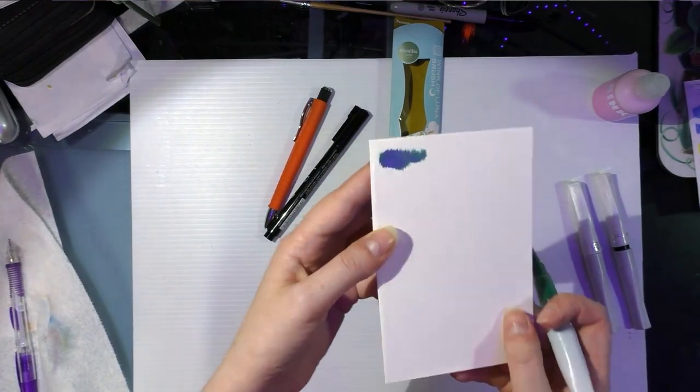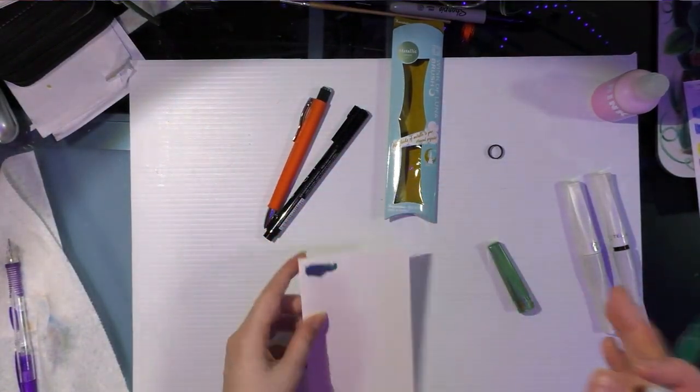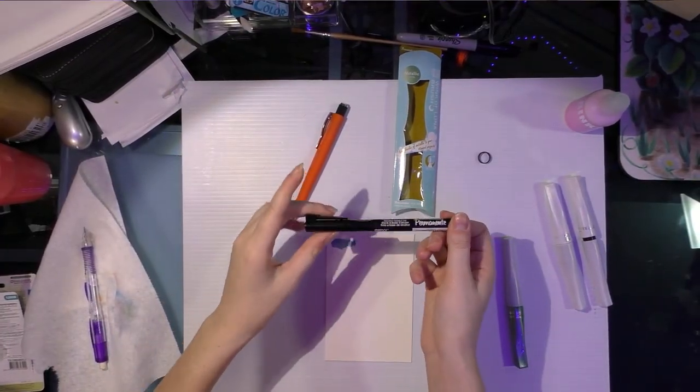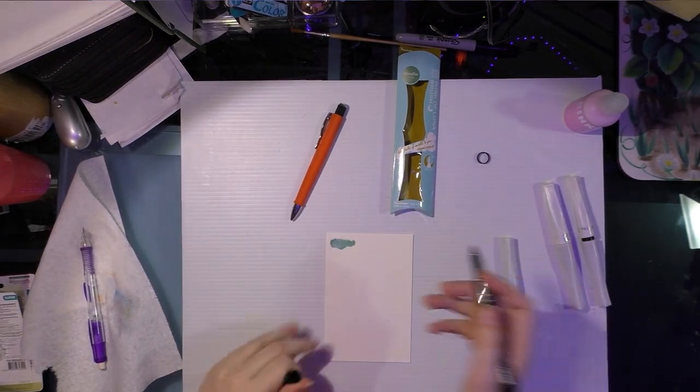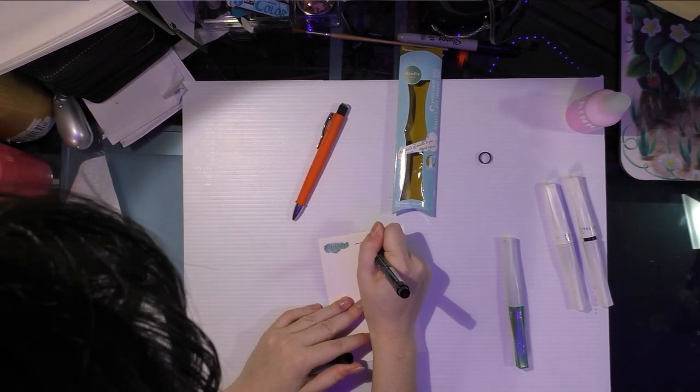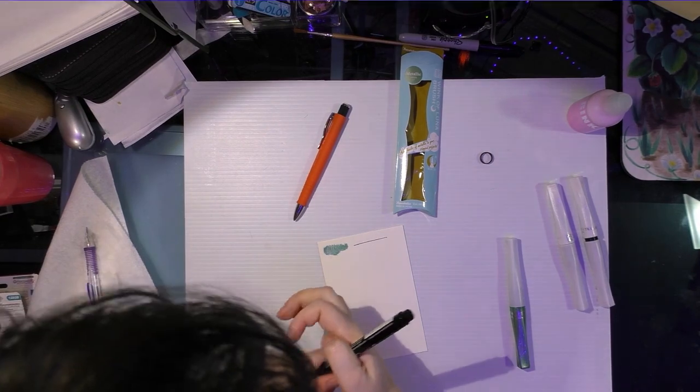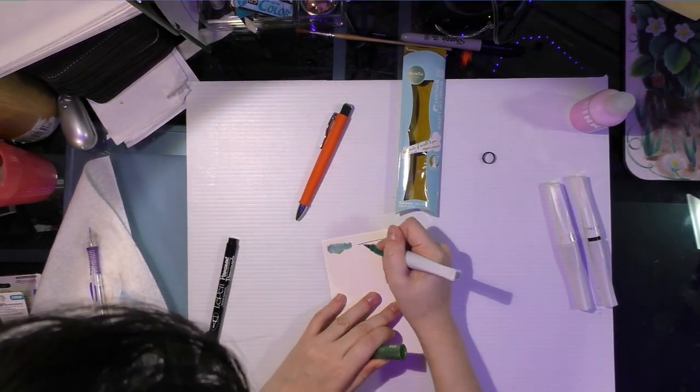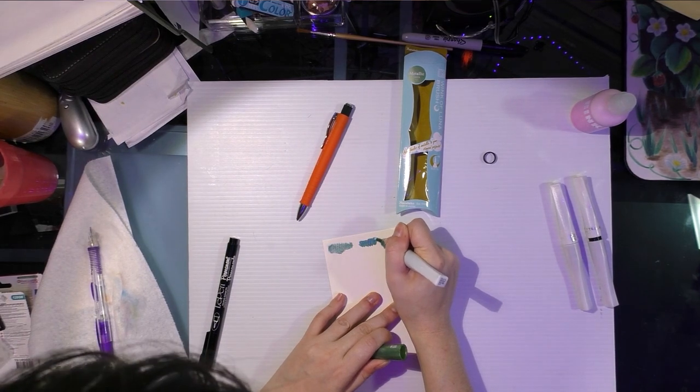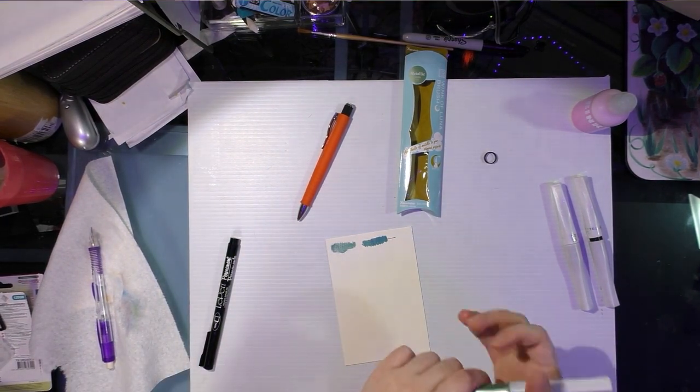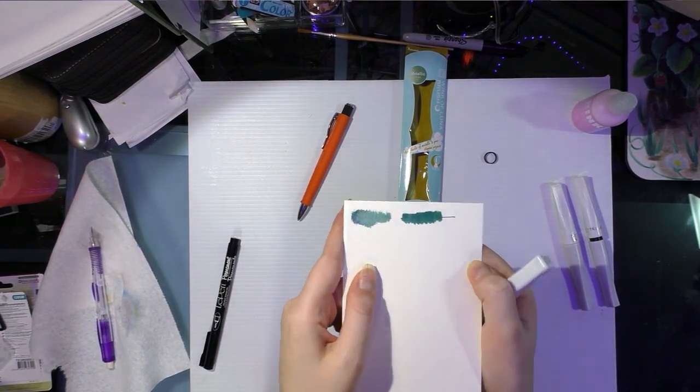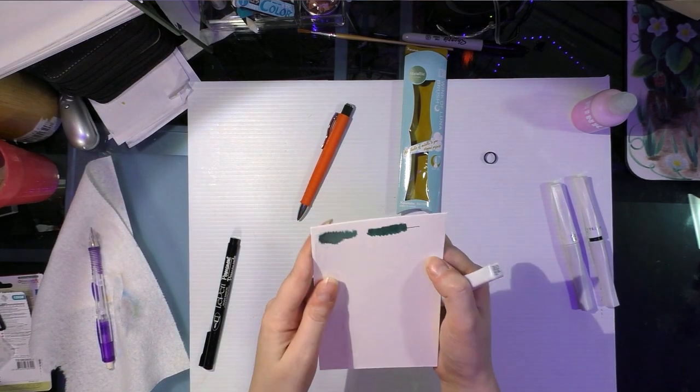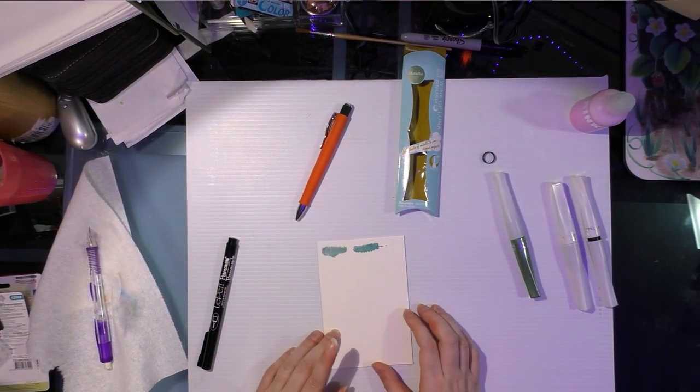I'm going to use the Sharpie Le Pen permanent, which is a permanent alcohol marker, to put down an opaque black line and we're gonna go over that with the Wink of Stella to see how opaque it is. As you can see, it's really opaque. You can't really see the black underneath it, so that's pretty cool.